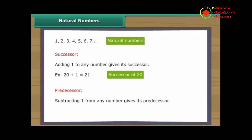Subtracting one from any number gives its predecessor. Example, subtracting one from twenty gives nineteen, which is the predecessor of twenty.